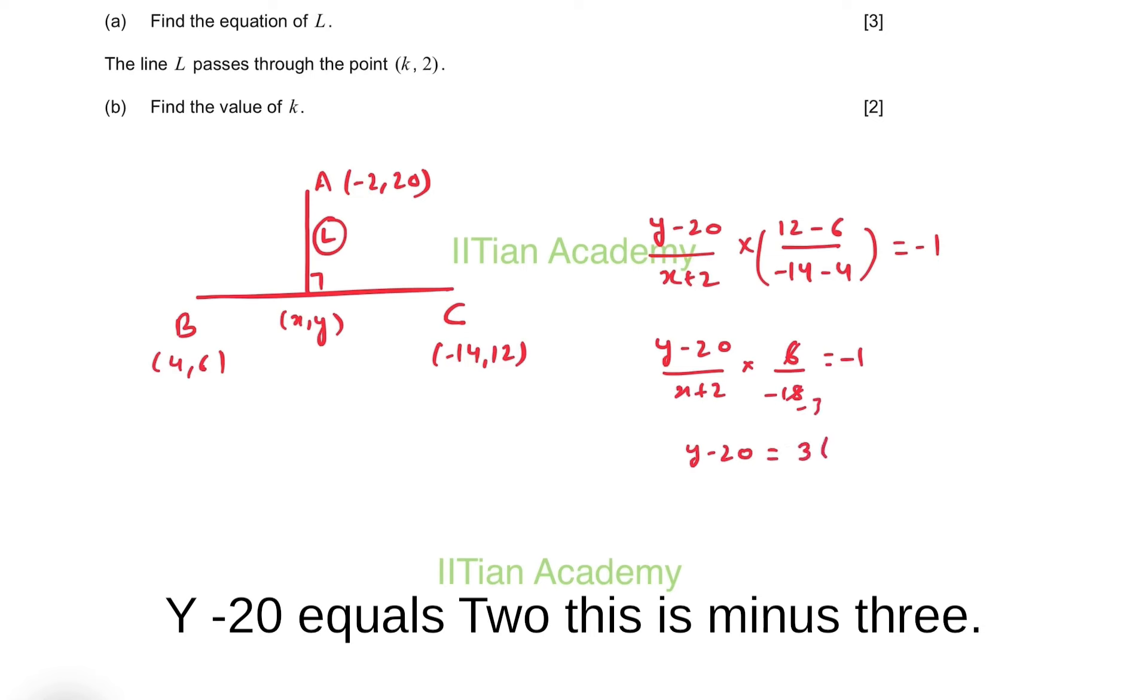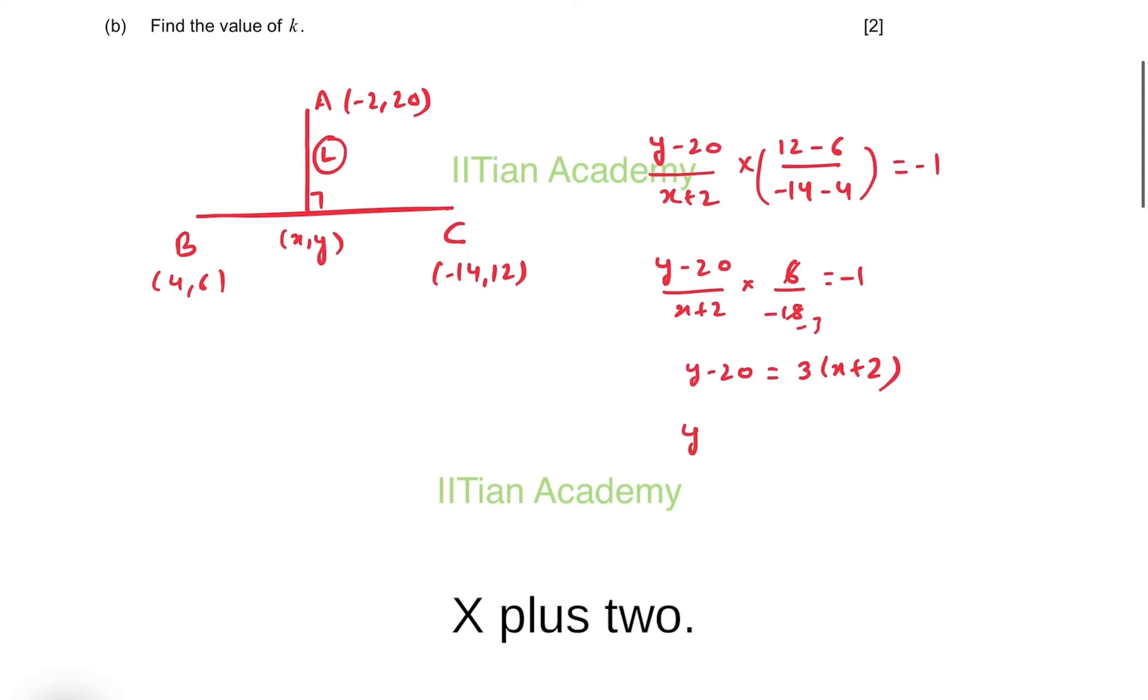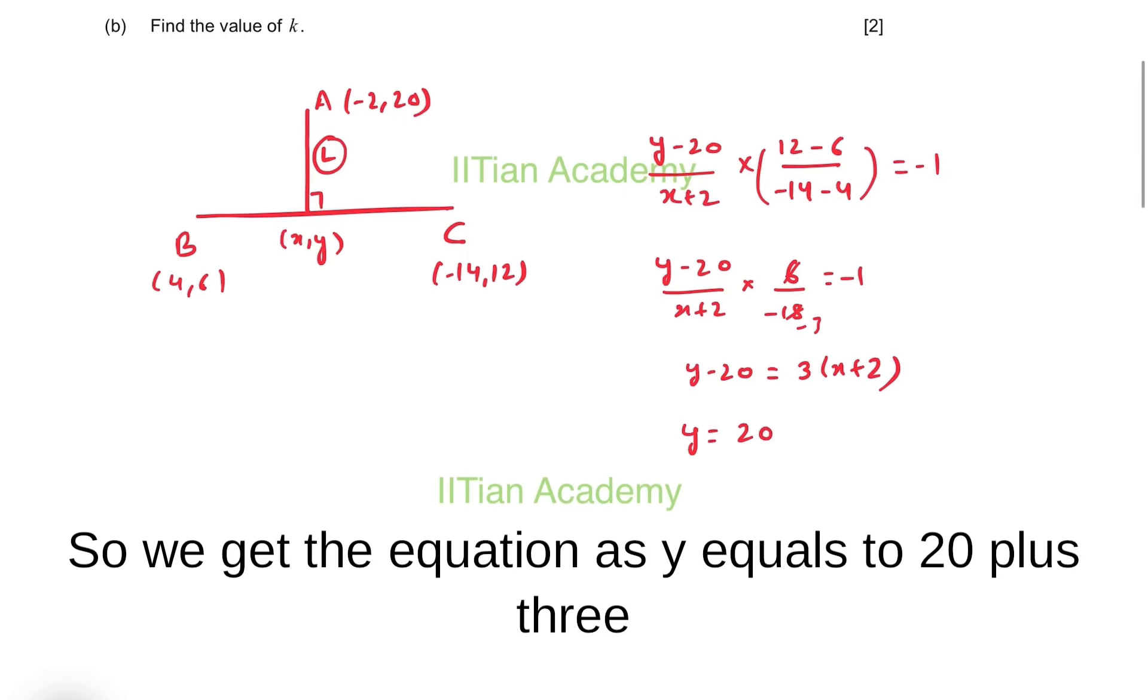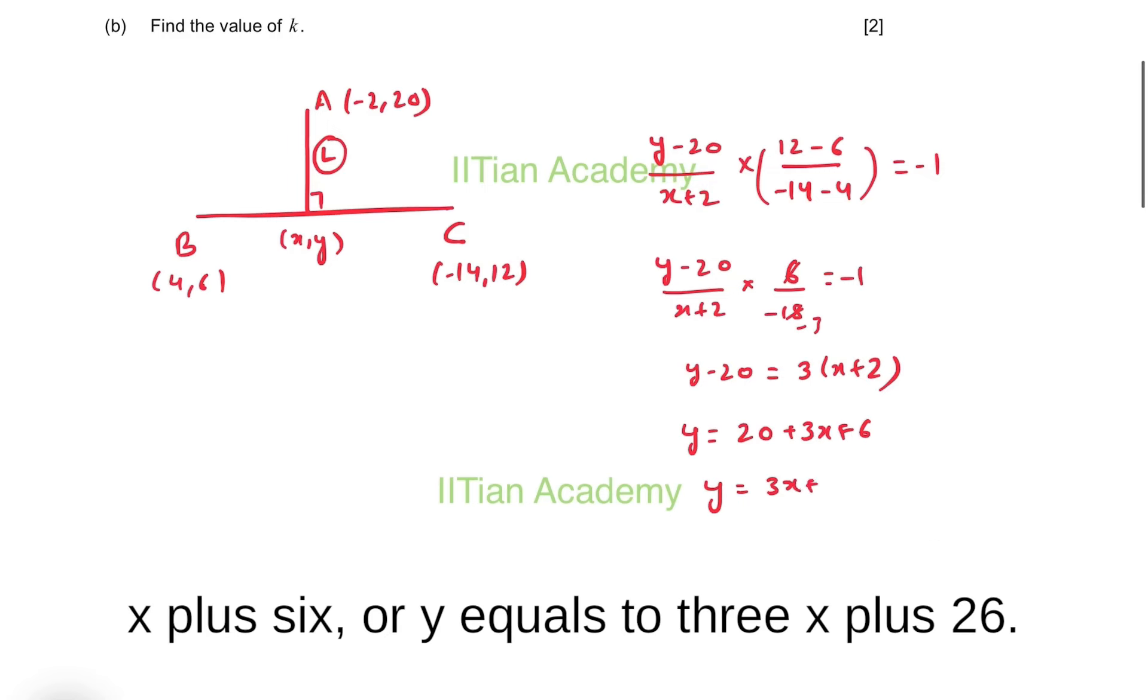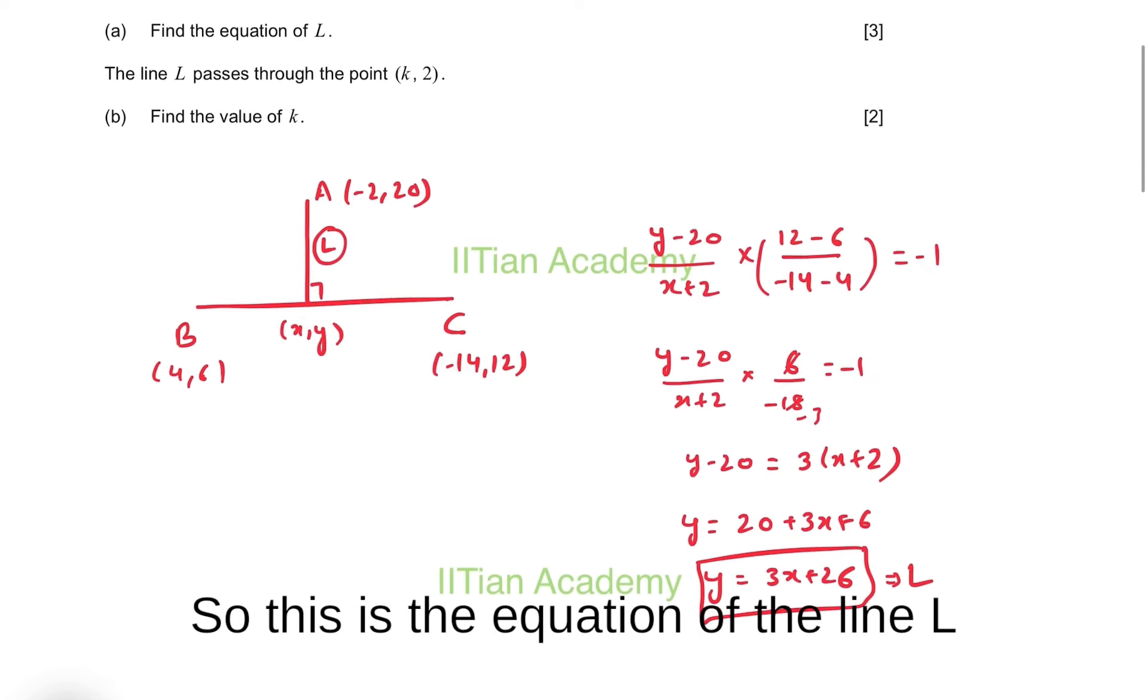This is minus 3. Taking this to the right: 3(x + 2). So we get the equation: y = 20 + 3x + 6, or y = 3x + 26. This is the equation of line L.